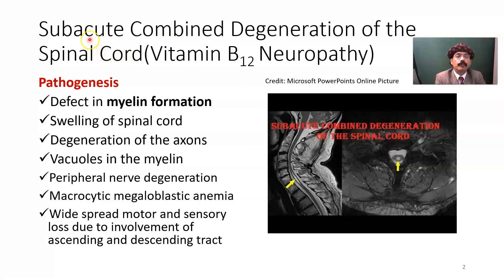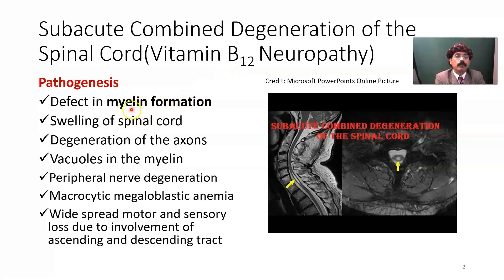What is the pathogenesis of subacute combined degeneration of the spinal cord or vitamin B12 neuropathy? First, there is a defect in myelin formation. Vitamin B12 is very essential for the synthesis of myelin by the oligodendrocyte in the central nervous system and the Schwann cell in the peripheral nervous system. There will be swelling of the spinal cord, initially in the thoracic region, then extending to the cervical and lumbar regions.